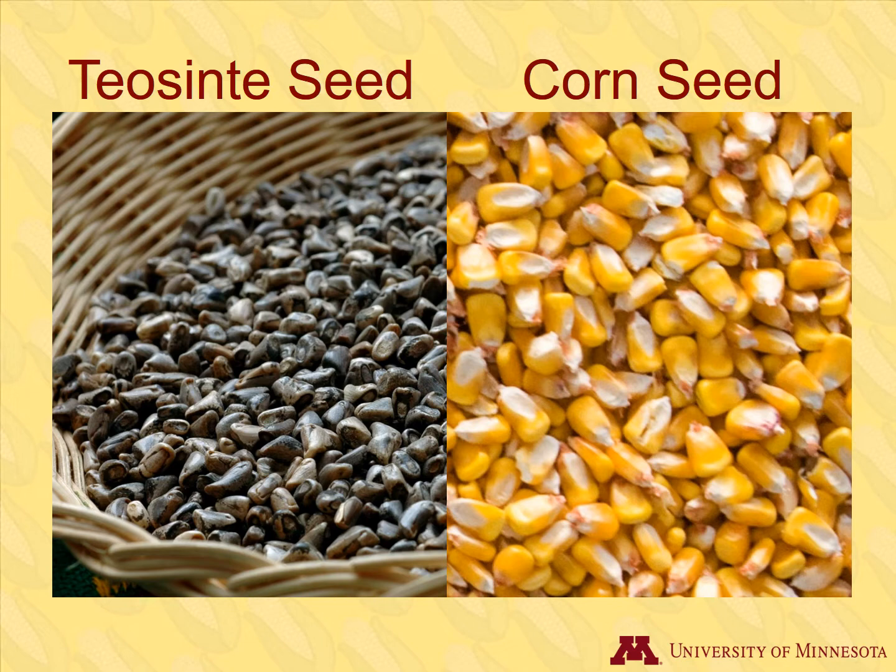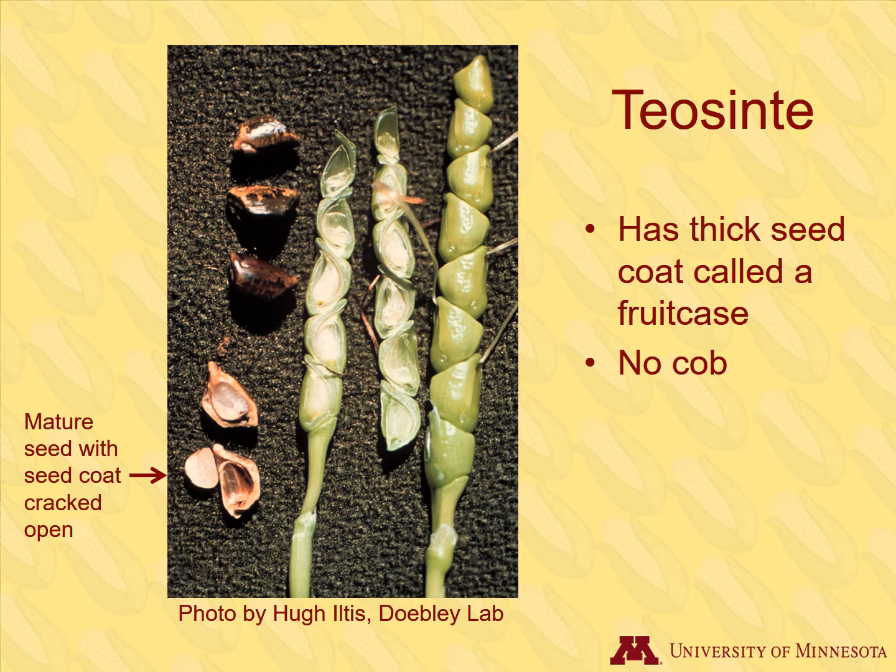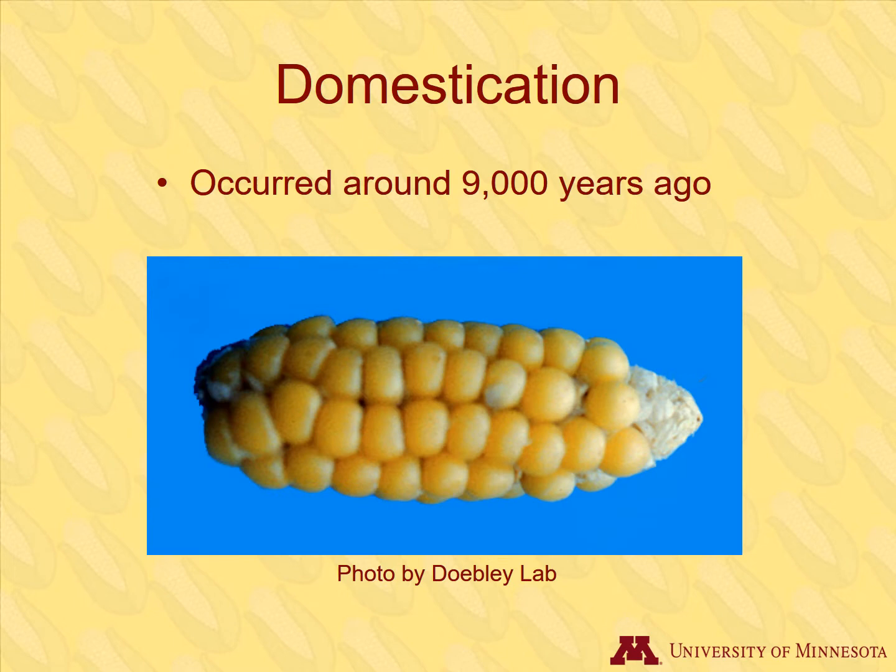However, DNA evidence has confirmed it. Let's compare Teosinte seed to corn seed. It definitely has a different size, shape, and color from modern-day corn. One big difference is the thick seed coat called a fruit case that covers Teosinte seed. We can see the seed coat here where it has been removed from a seed. Corn does not have this hard seed coating, and Teosinte does not have a cob like corn.